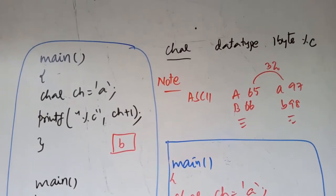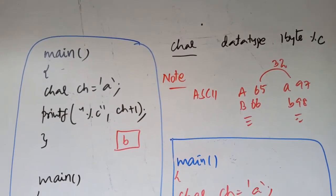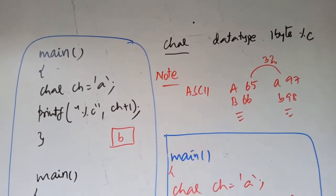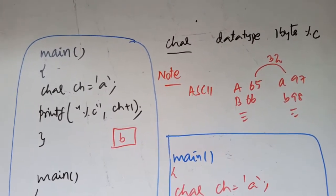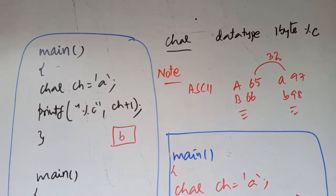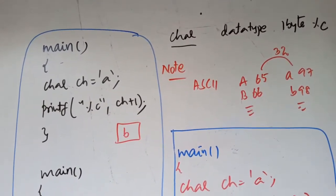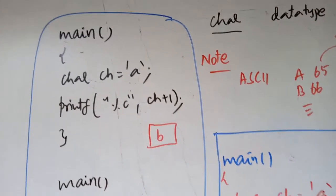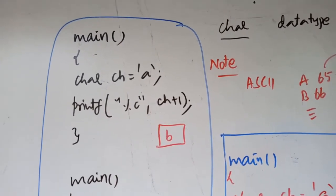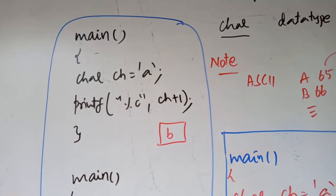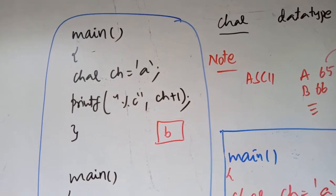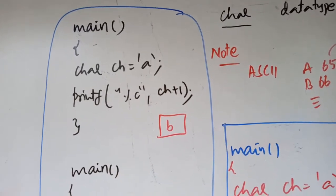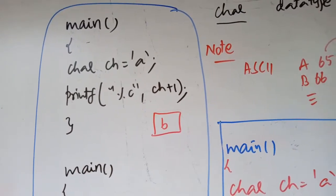Let's discuss primary data types: integer and character. A character occupies 1 byte of memory. We will now look at a demo program. The first program uses a variable ch as a single character constant.